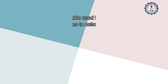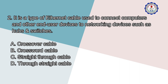Number 2: It is a type of Ethernet cable used to connect computers and other end-user devices to networking devices such as hubs and switches. A. Crossover Cable, B. Crossword Cable, C. Straight-Through Cable, D. Through Straight Cable.